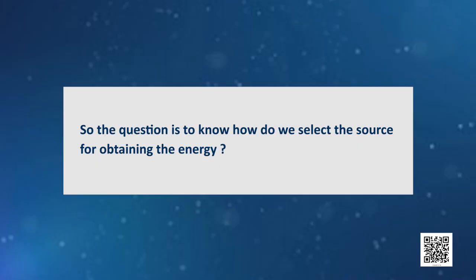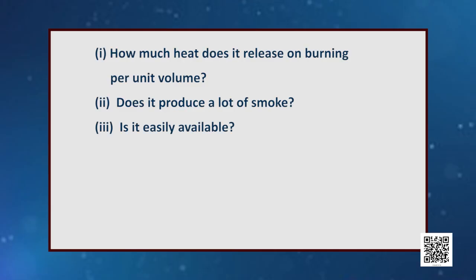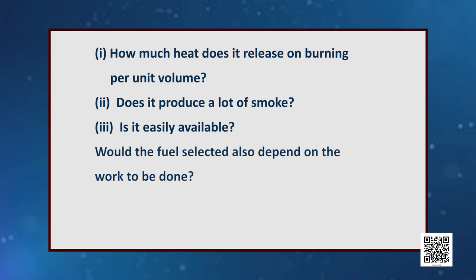Food is the basis of our energy system, and for cooking food we need energy. There was a time when wood, cow dung cakes, and coal were used as fuels in chulhas to cook food. Slowly we started using LPG gas cylinders in our households. To select a source of energy, we ask: how much heat does it release on burning per unit volume? Does it produce a lot of smoke? Is it easily available?